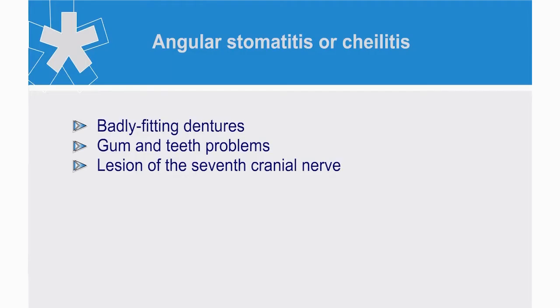Stomatitis or chelitis is seen in the elderly and is often associated with badly fitting dentures, gum and teeth problems. In rare cases, it may be due to a lesion of the seventh cranial nerve.